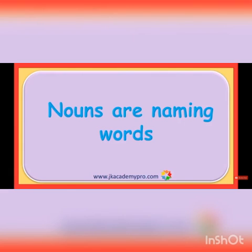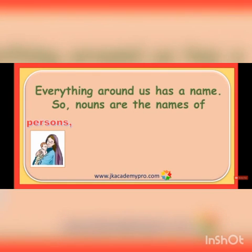Now what you have to do? You have to underline all the nouns in the following sentences. Here are a few examples. Everything around us has a name. So nouns are the names of a person. Any person is a noun — your name is a noun, any name is a noun.